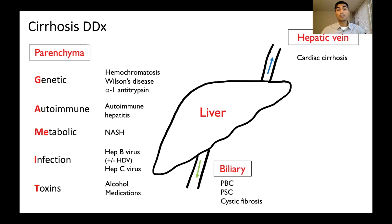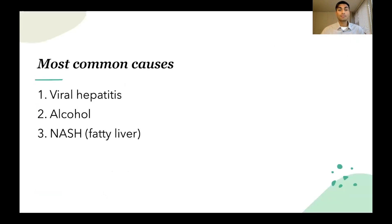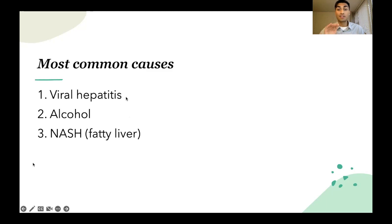The most common causes of cirrhosis are viral hepatitis — specifically hepatitis B and hepatitis C — alcohol, and NASH or fatty liver disease. Worldwide, viral hepatitis is the most common cause. Within developed countries, viral hepatitis has slightly lower prevalence, but it's still one of the most significant causes.